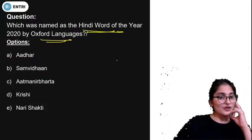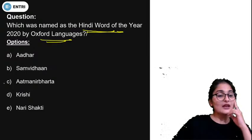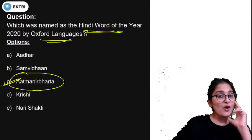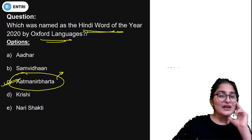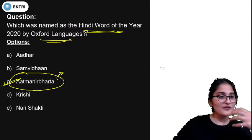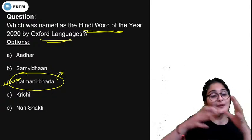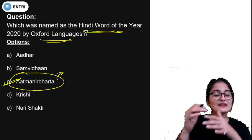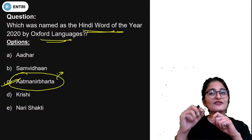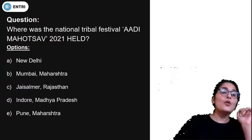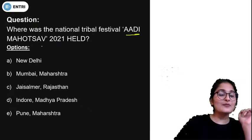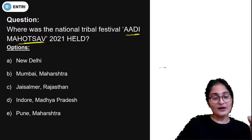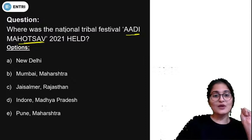Which word was named as the Hindi Word of the Year 2020 by Oxford Languages? The answer is Aatmanirbharta, option C. This word was chosen especially after COVID-19, as we have seen Aatmanirbharta prominently — there are schemes starting with the term Aatmanirbharta. It signifies self-reliance.